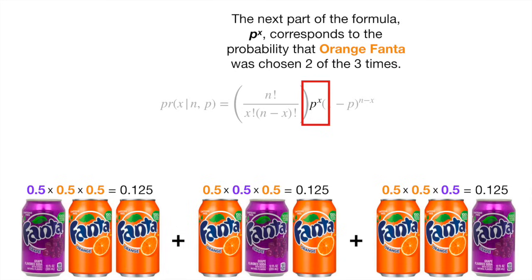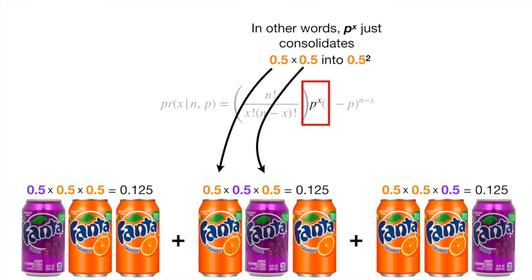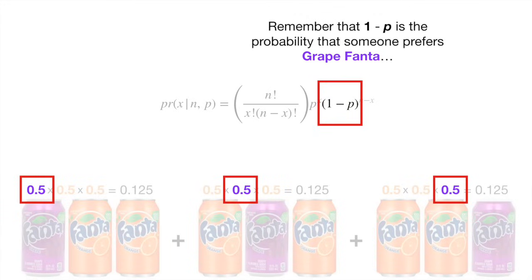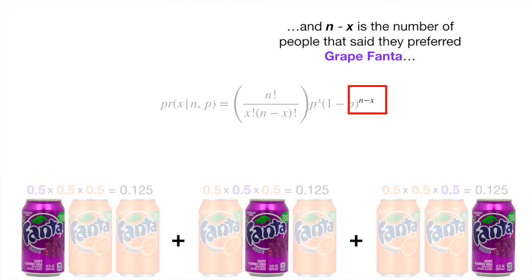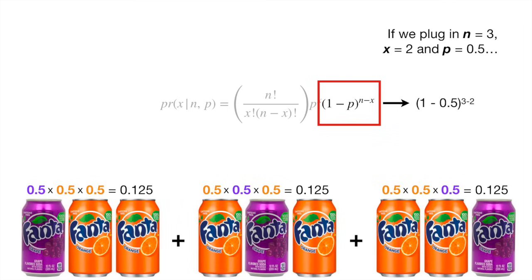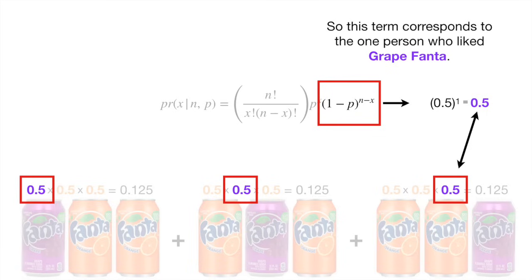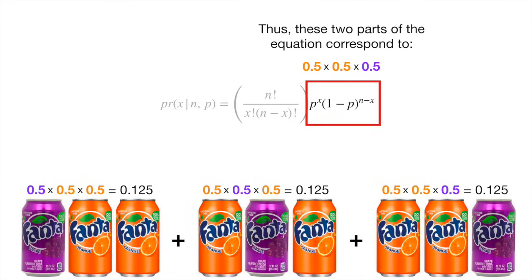The next part of the formula, p to the x, corresponds to the probability that orange Fanta was chosen two of the three times. In other words, p to the x just consolidates 0.5 times 0.5 into 0.5 squared. The last part of the equation corresponds to the probability that someone preferred grape Fanta. Remember that 1 minus p is the probability that someone prefers grape Fanta, and n minus x is the number of people that said they preferred grape Fanta. If we plug in n equals 3, x equals 2, and p equals 0.5 and do the math, we get 0.5 — this term corresponds to the one person who liked grape Fanta.